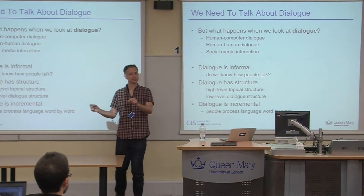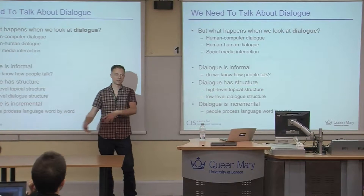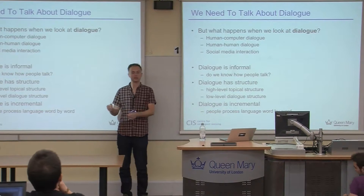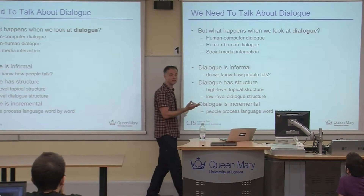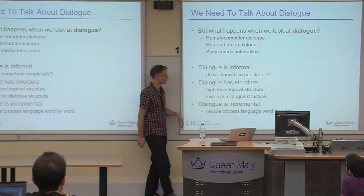There are three major problem areas with dialogue and conversational language. First, dialogue is generally informal — it's primary language use. We interrupt each other, use slang, hesitate, and there are disfluencies everywhere — it really looks very different from written language. Second, dialogue has a structure of its own: a high-level topical structure where we move from one topic to another, but also a low-level dialogue structure where people ask questions, answer them, ask clarification questions, greet, say goodbye — different sentence types have different effects on the dialogue.